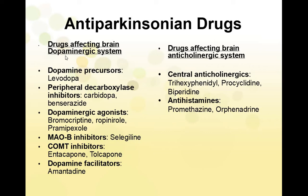There are two types of anti-parkinsonian drugs: drugs which affect the dopaminergic system — increasing dopamine — and drugs which affect the anticholinergic system — decreasing acetylcholine. Drugs affecting the dopaminergic system include dopamine precursors like levodopa, peripheral decarboxylase inhibitors like carbidopa and benzerazide, dopaminergic agonists like bromocriptine, ropinirole, or pramipexole, monoamine oxidase B inhibitors like selegiline, catechol-O-methyltransferase inhibitors like entacapone or tolcapone, and dopamine facilitators like amantadine. Drugs affecting the anticholinergic system include central anticholinergics like trihexyphenidyl, procyclidine, or biperiden, and antihistamines like promethazine.